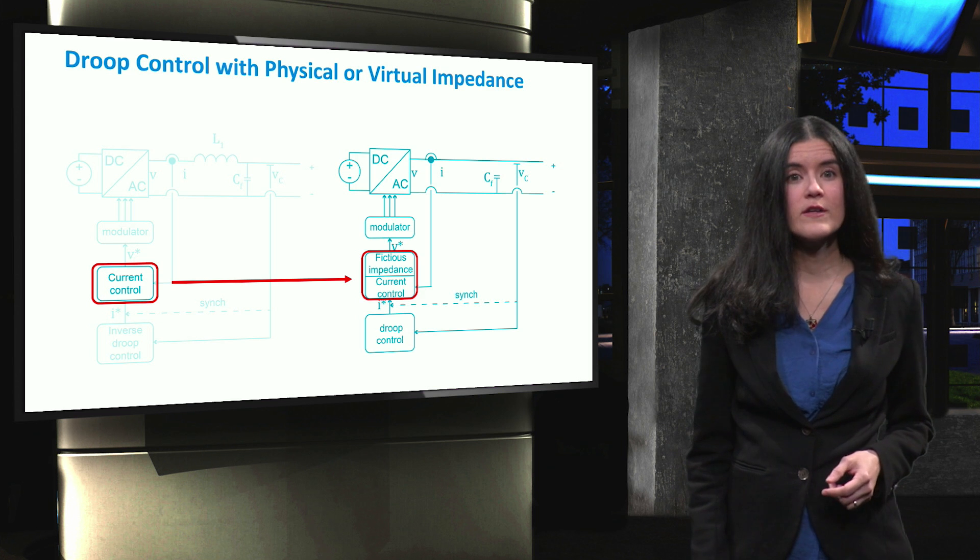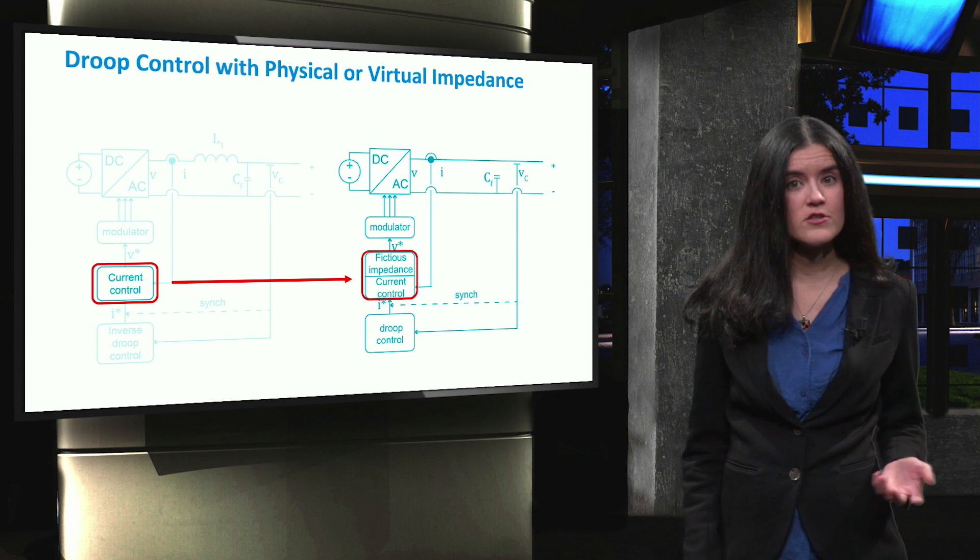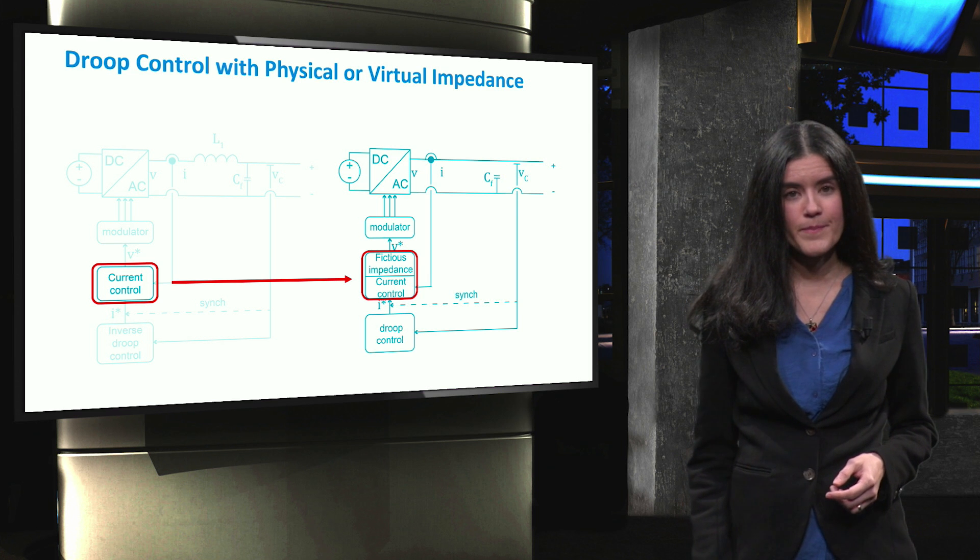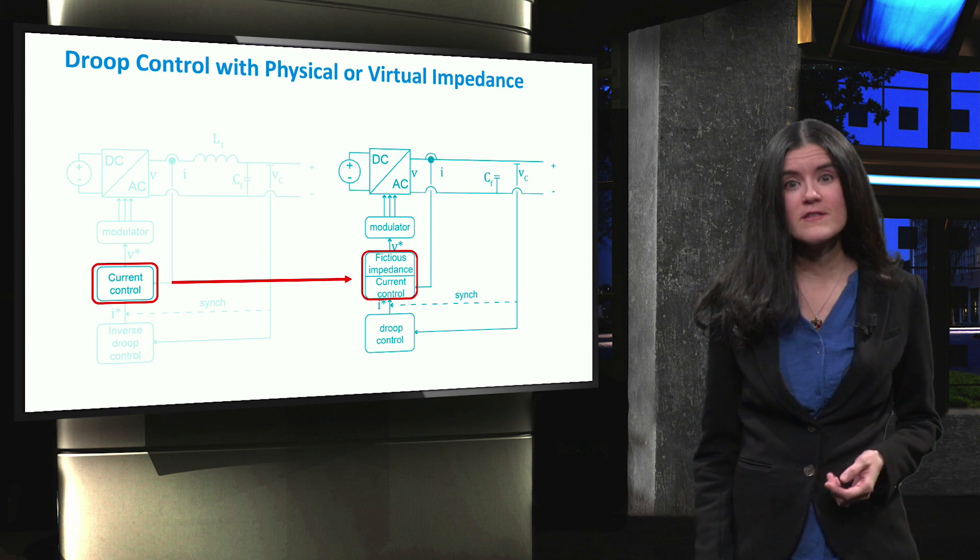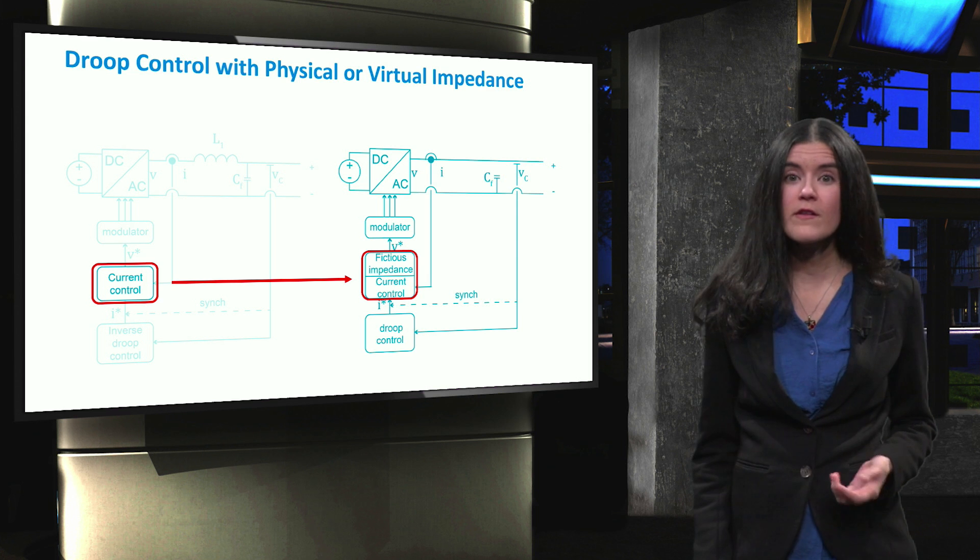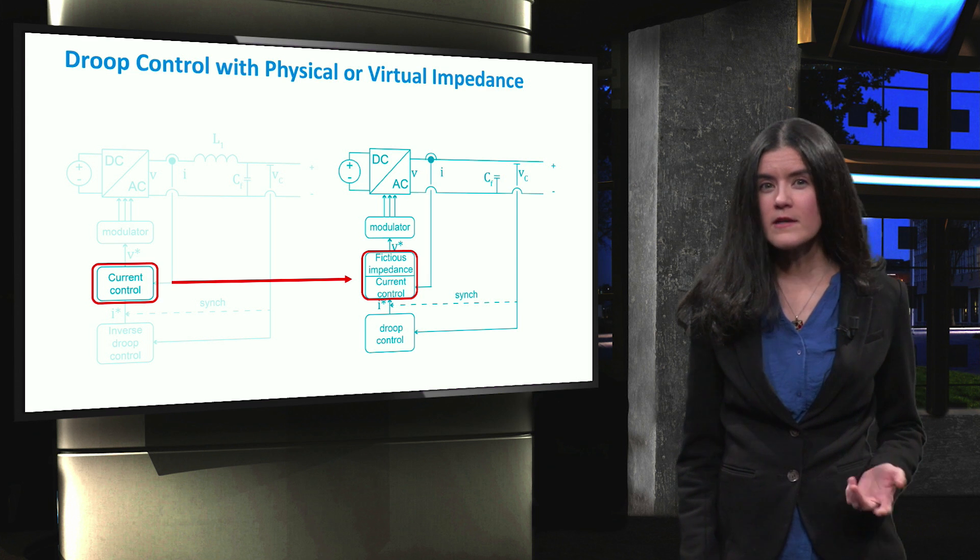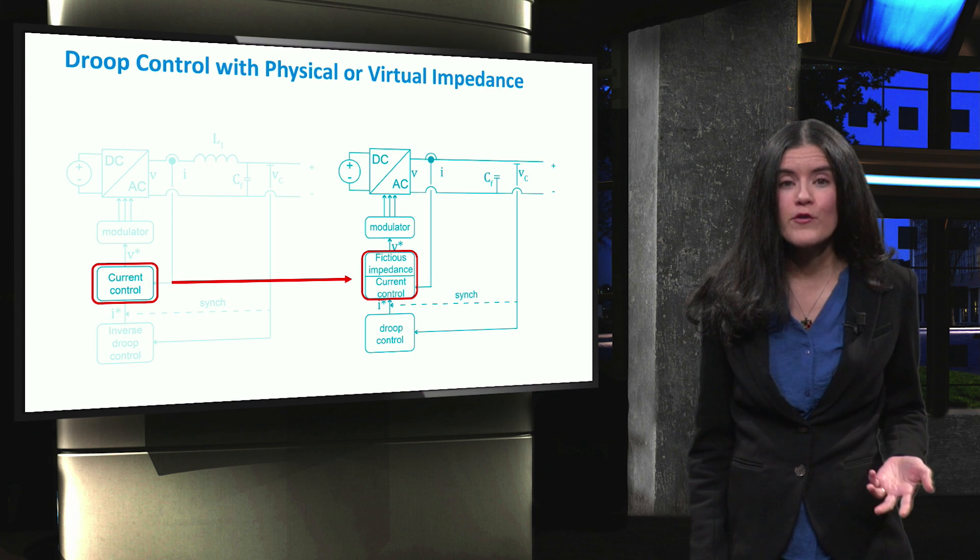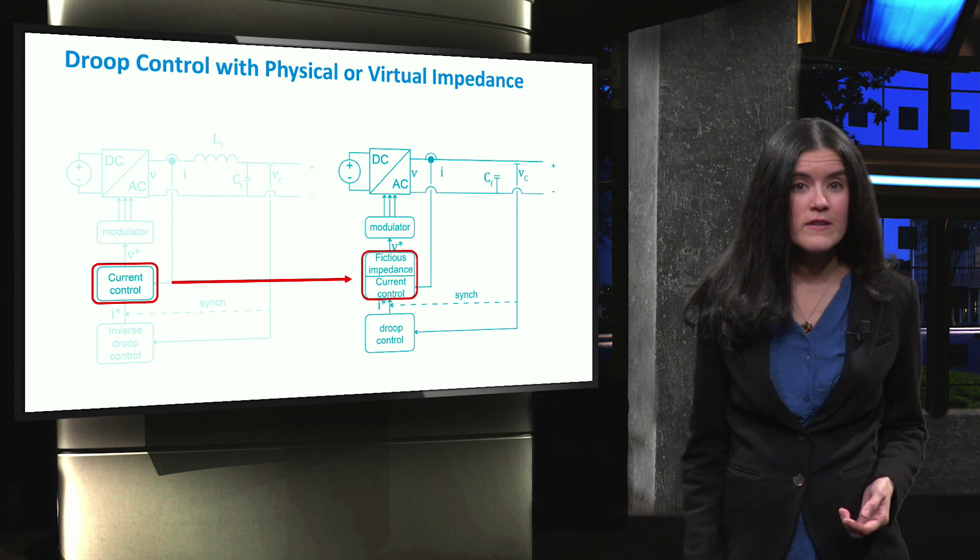Another solution is to introduce the so-called fictitious or virtual impedance in the control loop of the power converter. Power converters have a very fast control over their active and reactive power. Thanks to the additional virtual loop, power converters are able to reproduce the behavior of an actual inductor or filter.